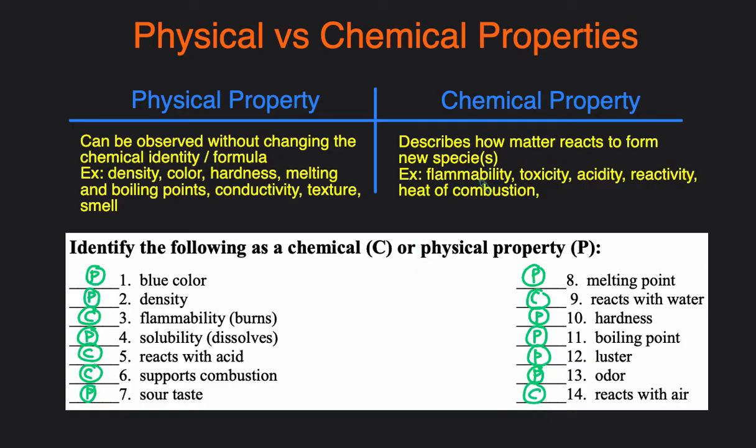These pretty much will be the chemical properties that you'll probably see on the test with maybe one or two more, but these are the most common ones. So that's it. That's the difference between chemical versus physical property.